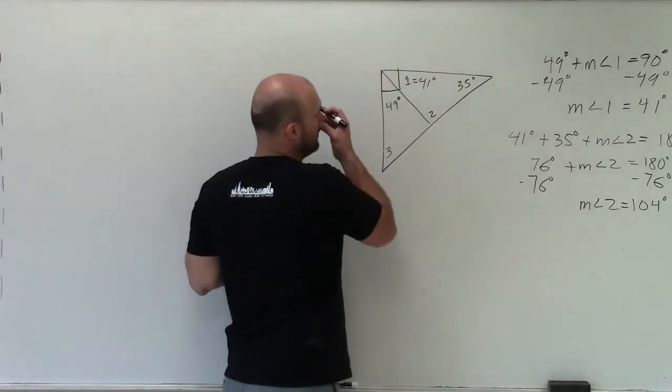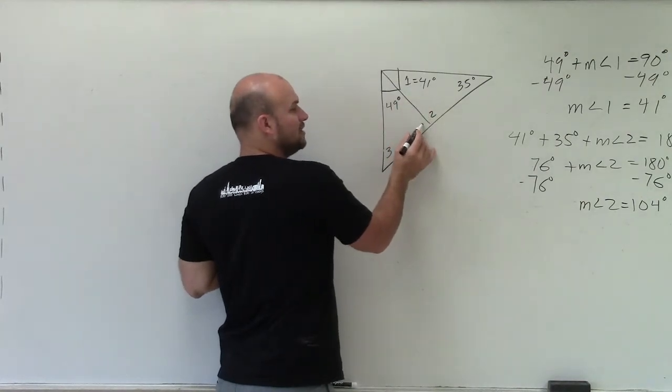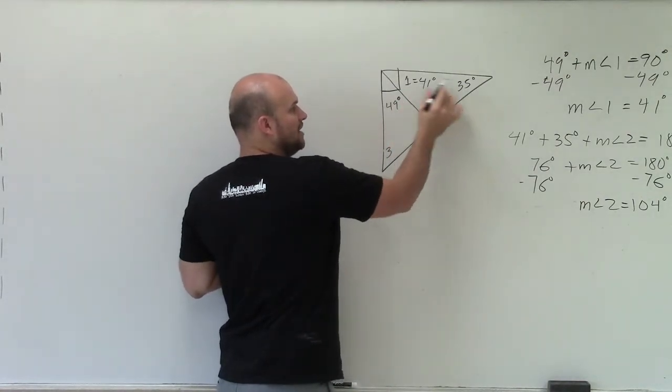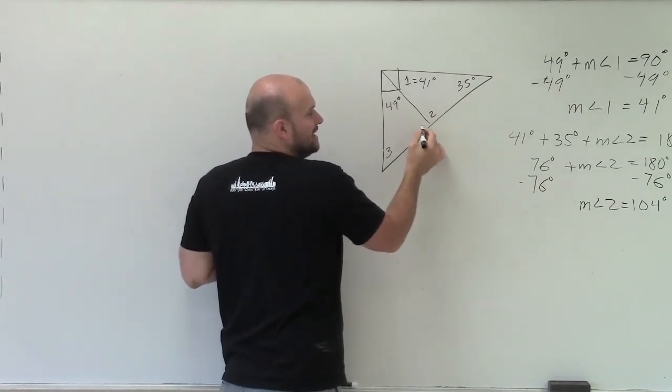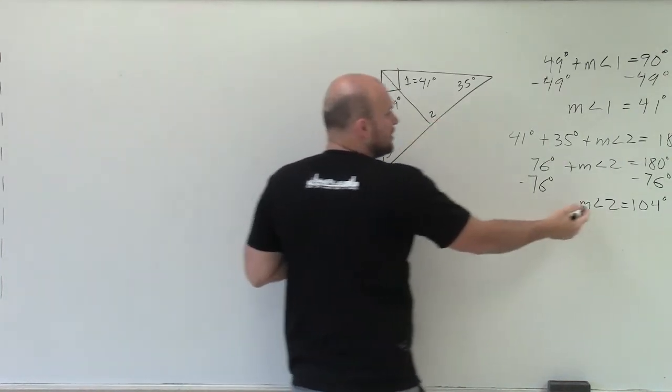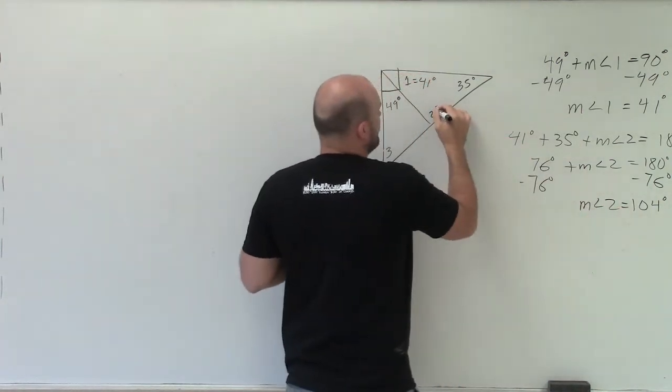a couple different things. We've talked about the exterior angle of a triangle is equal to the sum of the two opposite angles. Or you could also say that this angle is supplementary with angle 2.